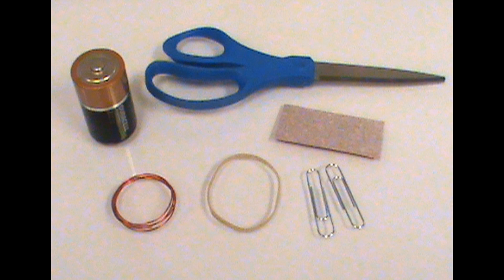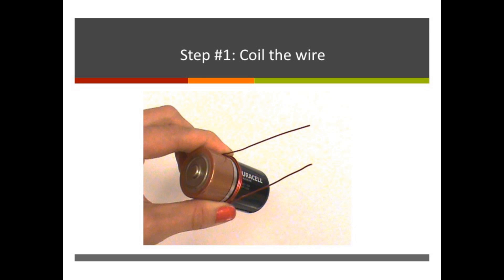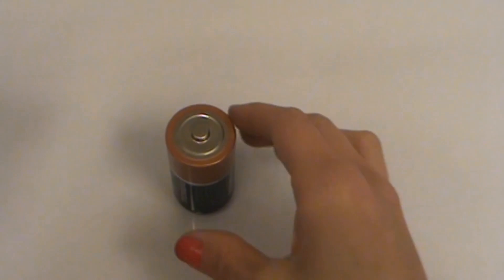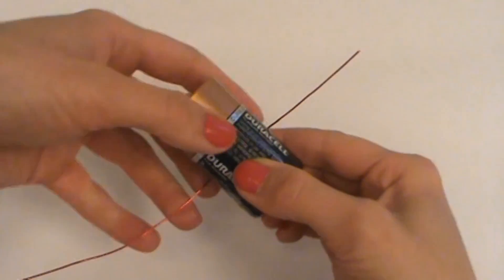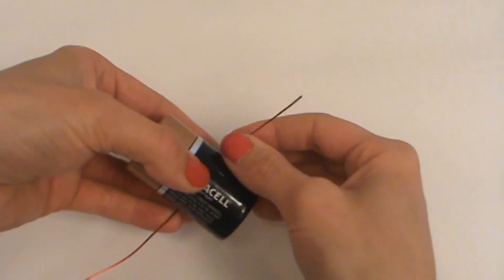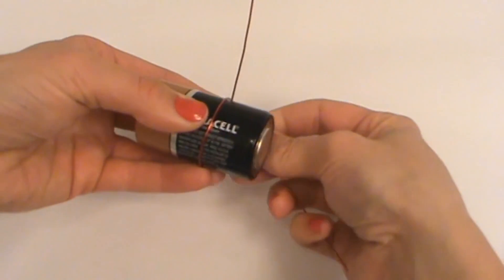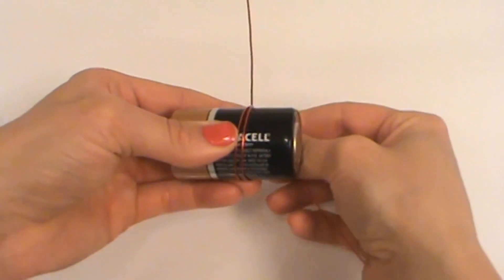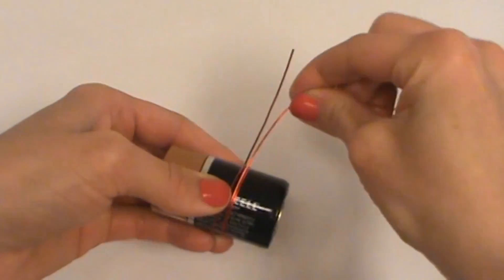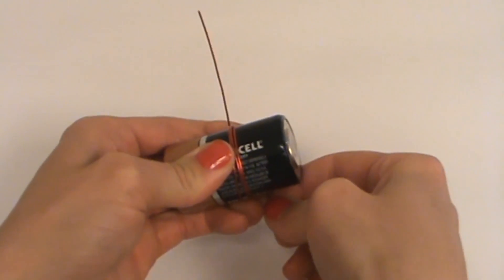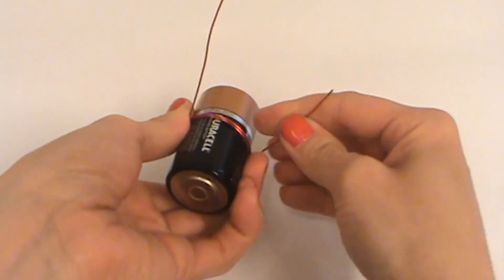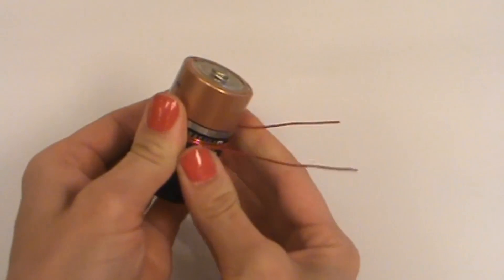First, take your battery and coil wire and wrap the wire around the battery three times. You want this to be medium tightness so the wire stays in a loop yet has slack to slide off the battery. Leave about two inches of slack on each end of the loop as shown.